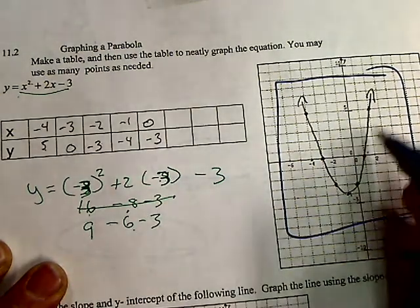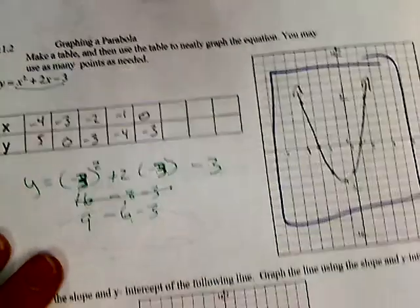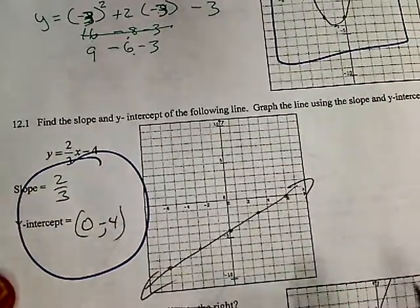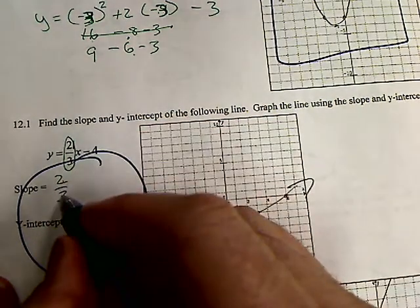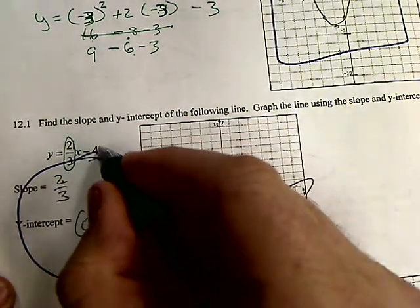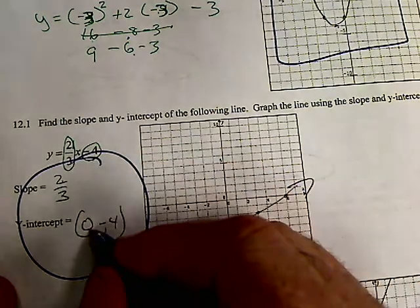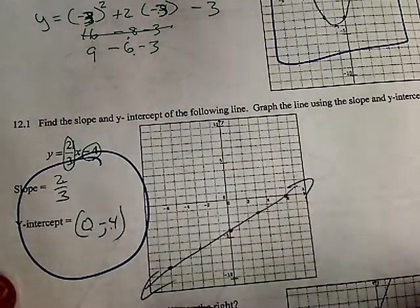Find the slope and the y-intercept. My slope is 2/3. My y-intercept is at (0, -4). That's a negative 4 if you can't read that through the circle here.